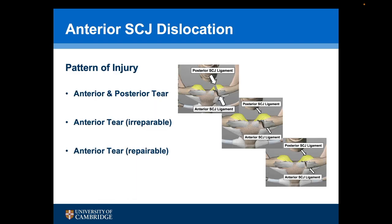There are three patterns of injury following an anterior dislocation of the sternoclavicular joint. The first is where both the anterior and posterior ligaments are torn. The second is where the anterior ligament has been torn and is irreparable but the posterior ligament is intact. And the third, which is normally in the acute situation, is where the anterior tear is potentially repairable and the posterior ligament is intact. There are three potential operations to treat each of these.